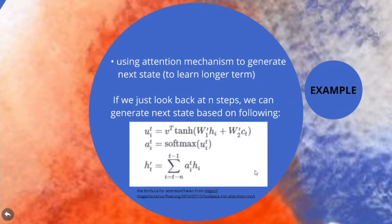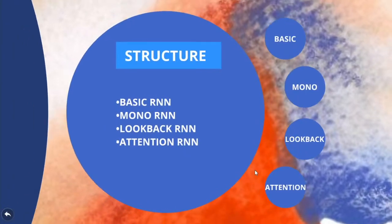AttentionRNN uses previous state output to get an attention mask. With this attention mask, we can get a weighted sum of previous state outputs. Then we calculate the outputs with the current state input as the new input for the RNN cell. With this method, we can learn longer-term dependencies based on the structure.